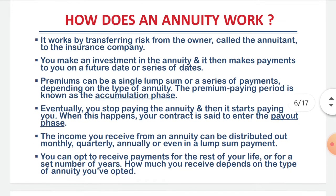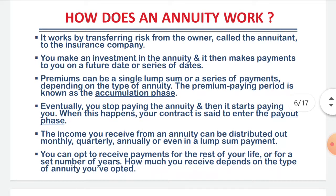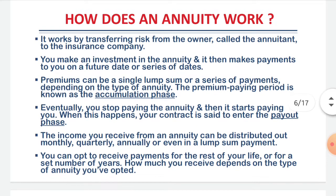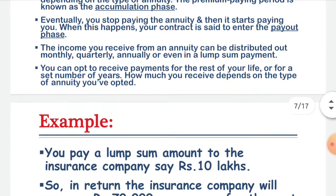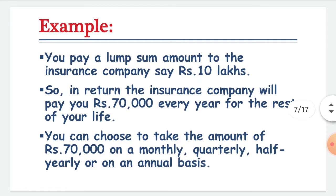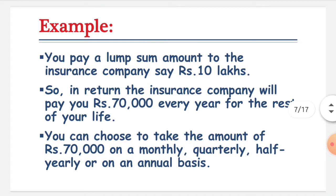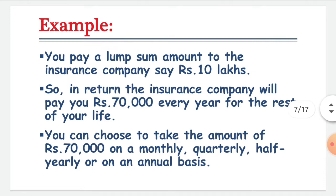The returns may be paid monthly, quarterly, annually, or even in a lump sum payment. How much you receive depends on the type of annuity you've opted for. For example, you pay a lump sum amount to the insurance company — say Rs. 10 lakhs — and in return, the insurance company will pay you Rs. 70,000 every year for the rest of your life. You can choose to take the amount on a monthly, quarterly, half yearly, or annual basis, depending upon the type of annuity.